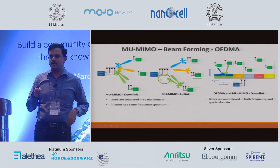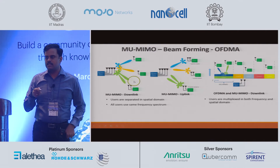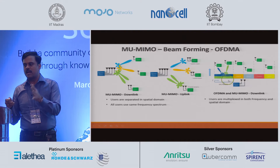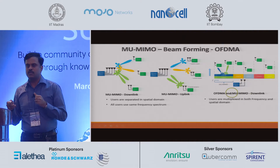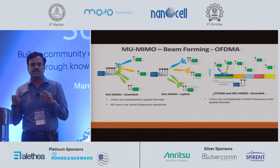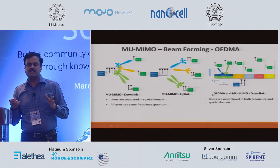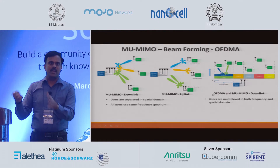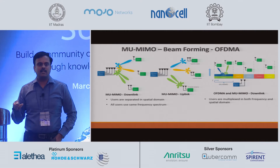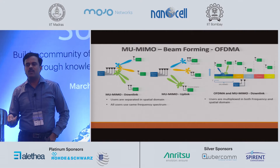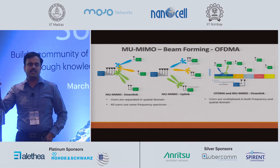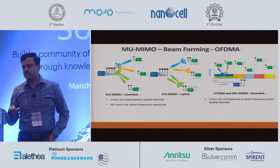We can technically do OFDMA for both uplink and downlink. That brings in a really big complexity — that is the biggest challenge for anybody implementing an 11AX system. The challenge starts from very low level chip design all the way to system validation and deployment.